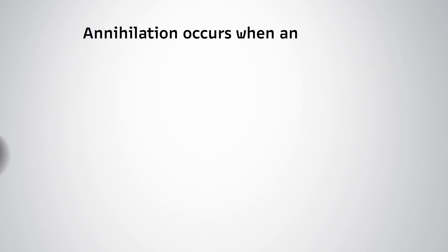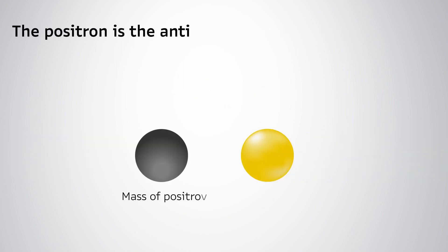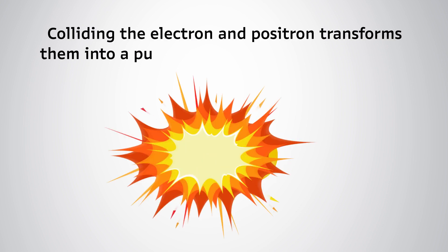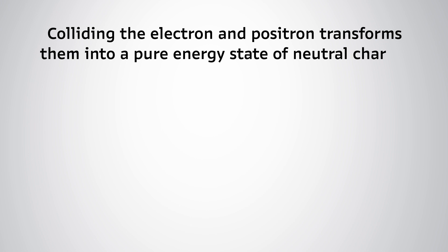Annihilation occurs when an electron collides with a positron. The positron is the antiparticle of the electron. It has the same mass as the electron but opposite charge. Colliding the electron and positron transforms them into a pure energy state of neutral charge.